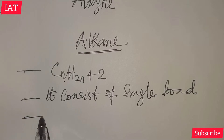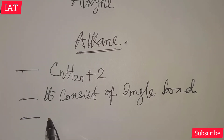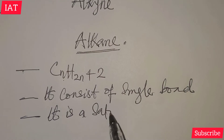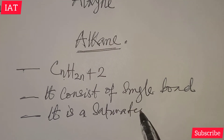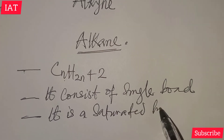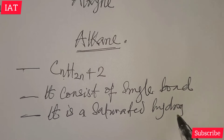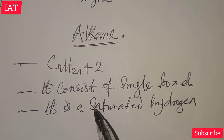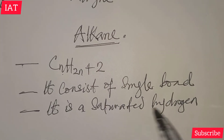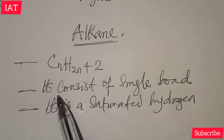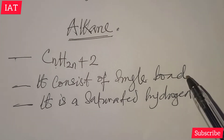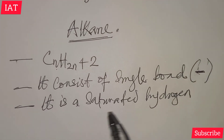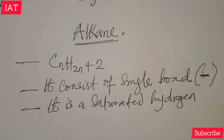Another essential property of alkane is that it is a saturated hydrocarbon. In exam problems, they may ask why alkane is a saturated hydrocarbon. You can answer that because it consists of single bonds — the presence of single bonds makes it a saturated hydrocarbon.